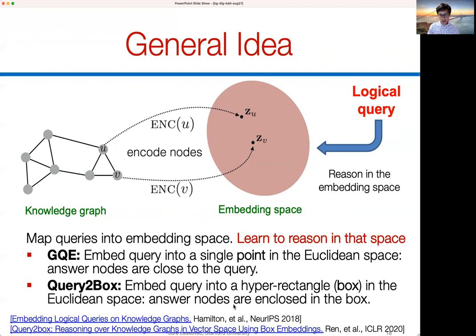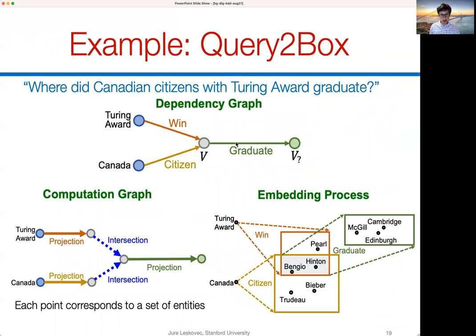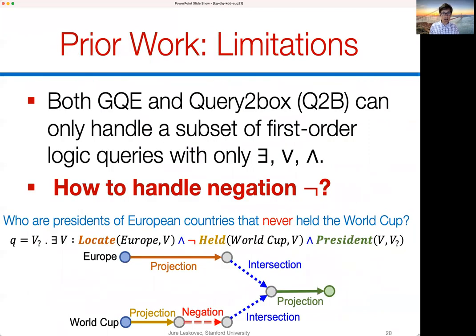With Query2Box, given a query execution graph, we execute it in the embedding space by taking a starting entity, applying an operator that returns a box, taking another entity's box, and taking their intersection — which is again a box. We then apply a spatial projection operator to get another box. The intersection of boxes is closed. However, the problem is it's unclear how to answer queries with an OR operator, and negation of a box is not a box — it's everything outside the box.